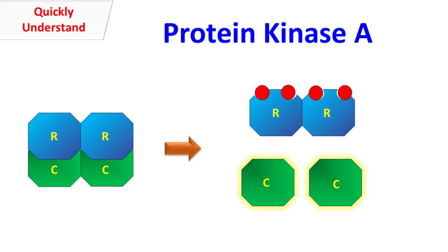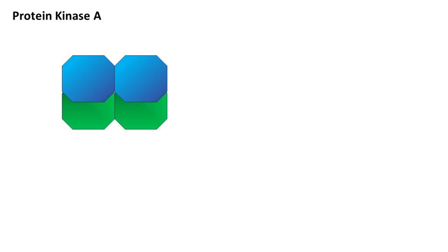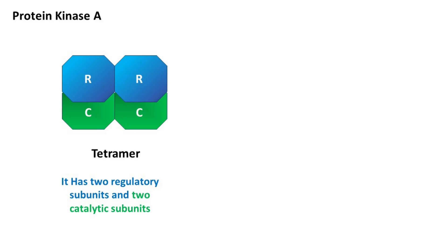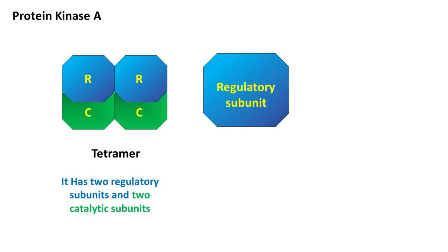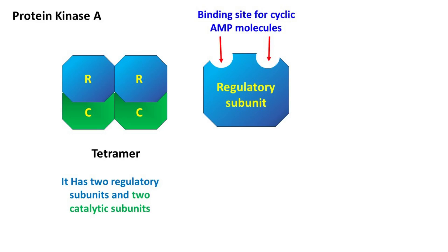Let's talk about protein kinase A. Protein kinase A is a tetramer with four subunits: it has two regulatory subunits denoted as R and two catalytic subunits denoted as C. Each regulatory subunit has binding sites for two cyclic AMP molecules. Since there are two regulatory subunits, there are a total of four binding sites for cyclic AMP.